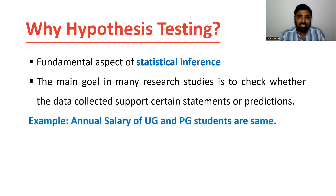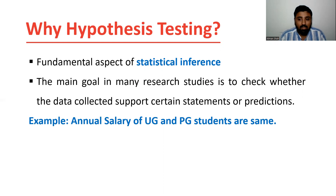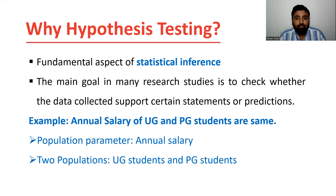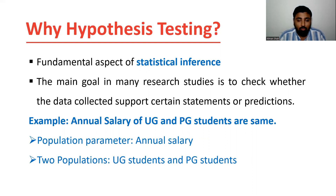Let's take this example. Suppose we are interested to know whether the annual salary of UG and PG students are the same. Here our population parameter is annual salary and we have two populations: UG students and PG students. The statement is that the annual salary of UG and PG students are the same — that is the assumption or prediction — and we want to check whether this is true or not.